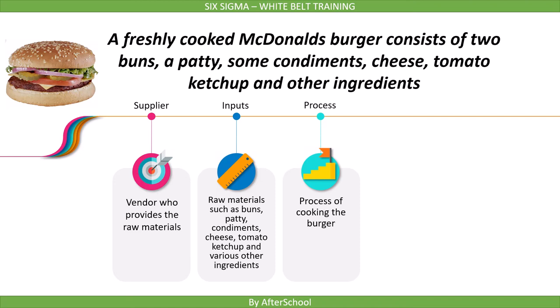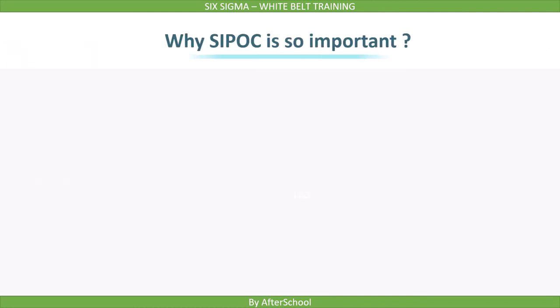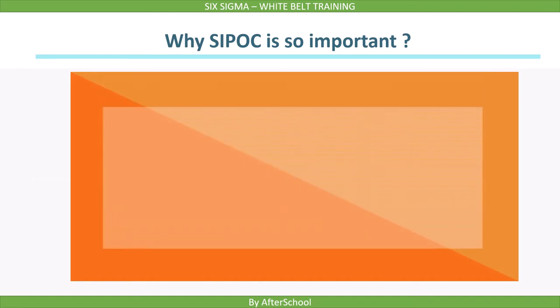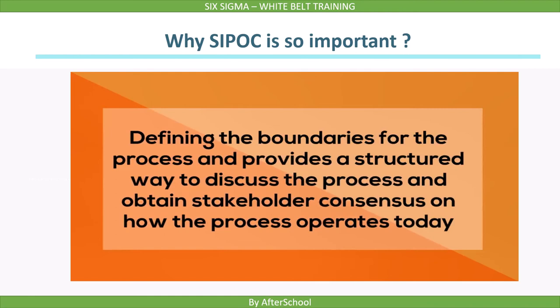The process of cooking the burger involves separately heating the patty and buns in an oven, then placing them together. Other ingredients such as cheese and condiments are added based on the customer's order. The output is a delicious McDonald's burger, and the customer is the one who ordered it. This was a simple example to understand how to create a SIPOC.